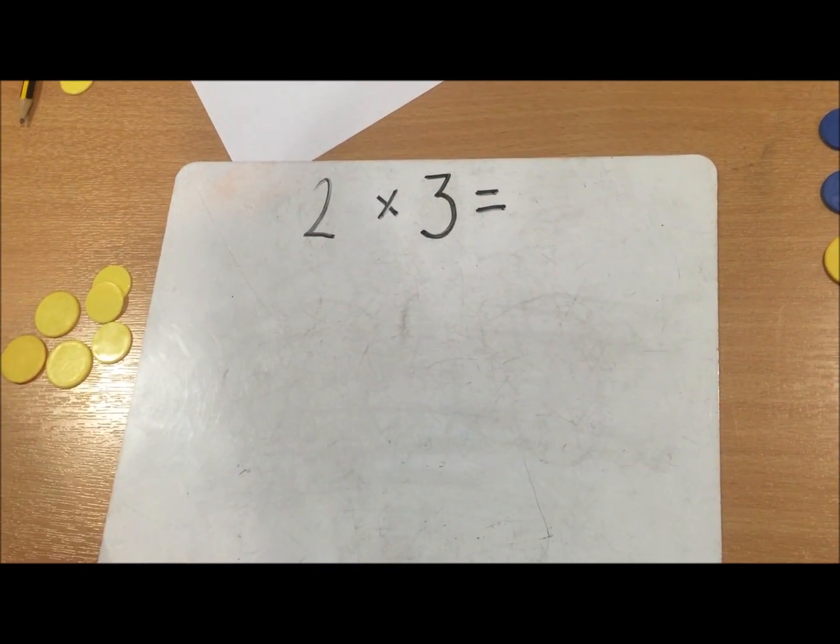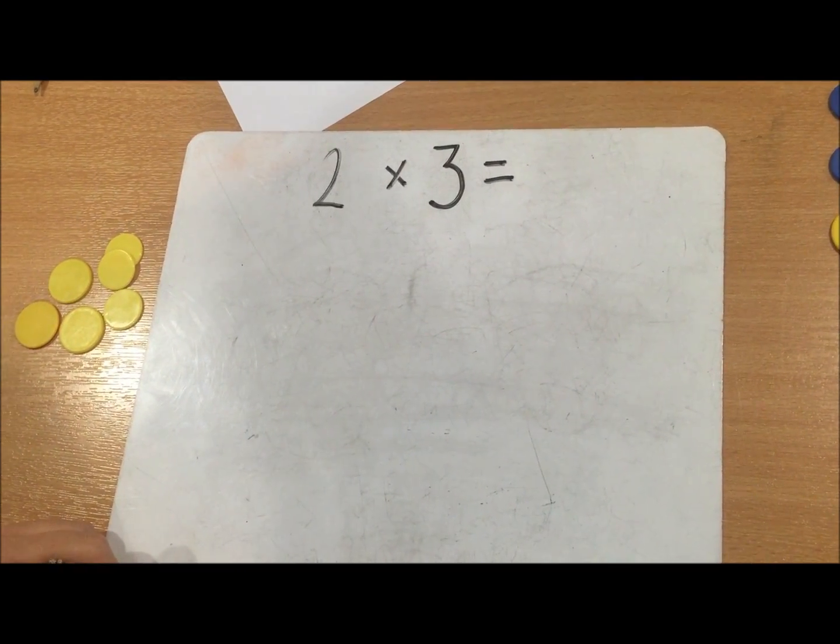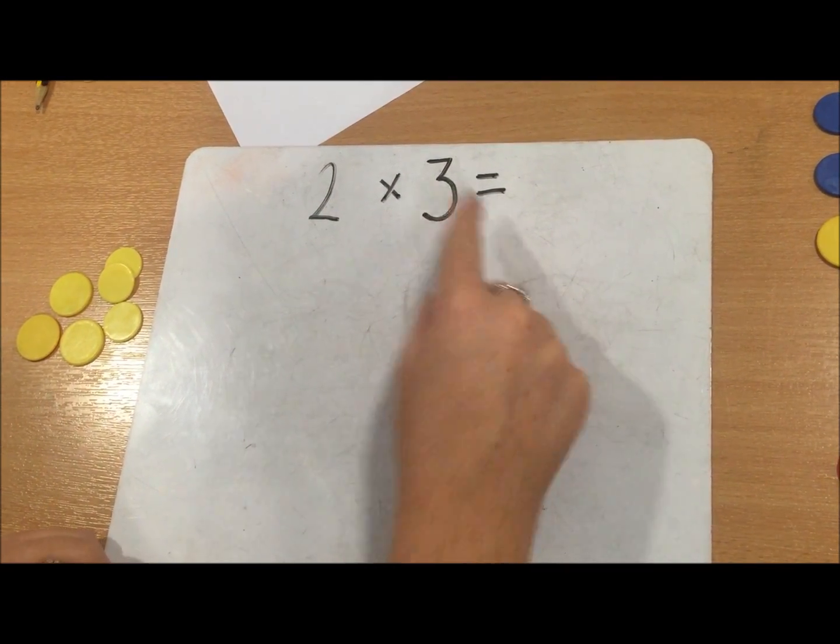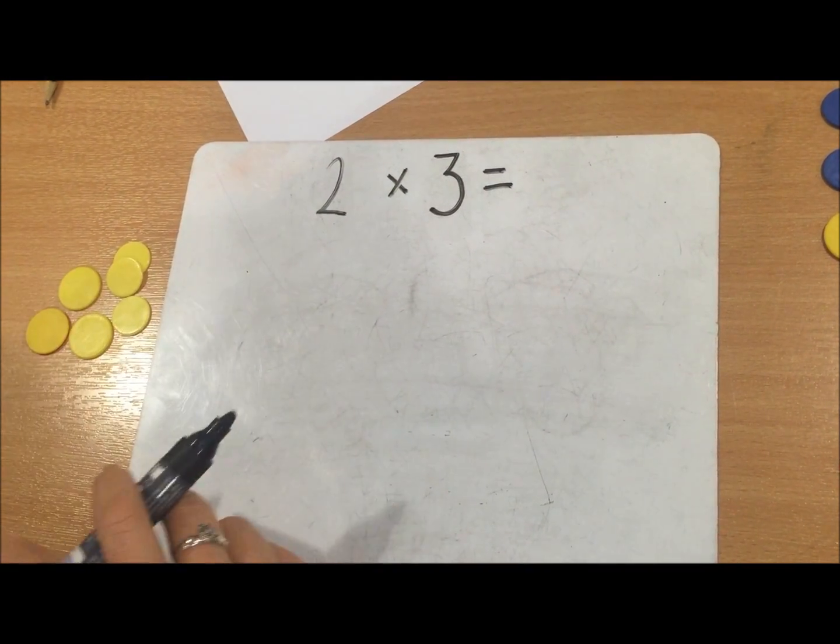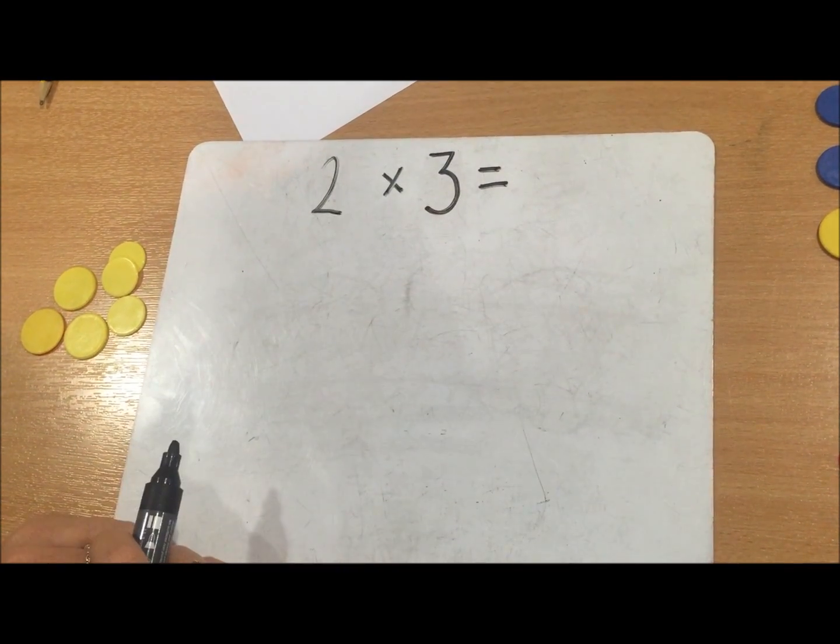Today we're going to be learning to multiply. The first thing we need to do is read the calculation: 2 times 3 equals. Because we're multiplying by three, we need to draw